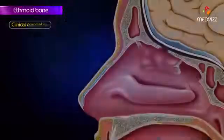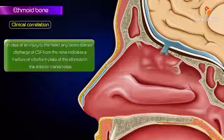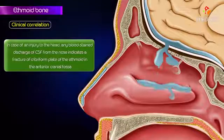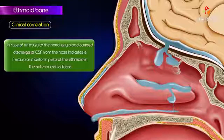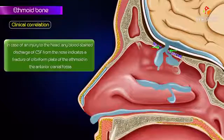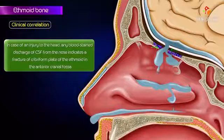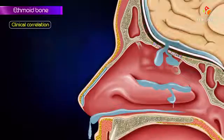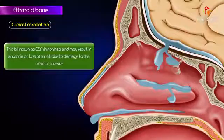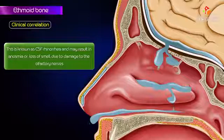In case of injury to the head, any blood-stained discharge or CSF from the nose indicates a fracture of the cribriform plate of the ethmoid bone in the anterior cranial fossa. This is known as CSF rhinorrhea, and may result in anosmia, or loss of smell, due to damage to the olfactory nerves.